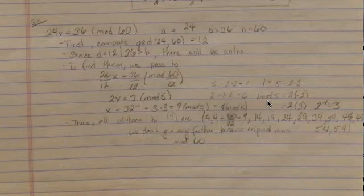We find that 1 mod 5 equals 2 to the negative 2. Negative 2 mod 5 is 3, therefore the inverse of 2 is 3.